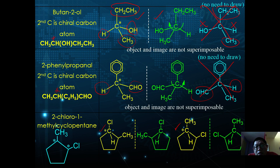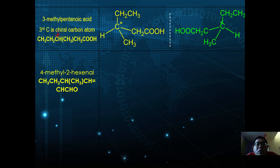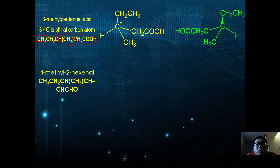Some molecules can exhibit both geometrical and optical isomerism. For 3-methylpentanoic acid, the third carbon is a chiral carbon atom surrounded by four different groups: H, CH3, CH2CH2COOH, and CH2CH3. When the reflected image is drawn, it confirms the molecule exhibits optical isomerism.